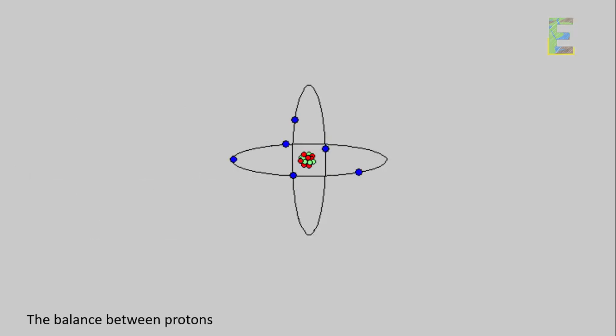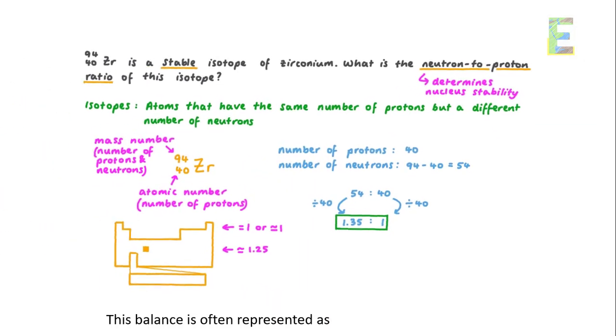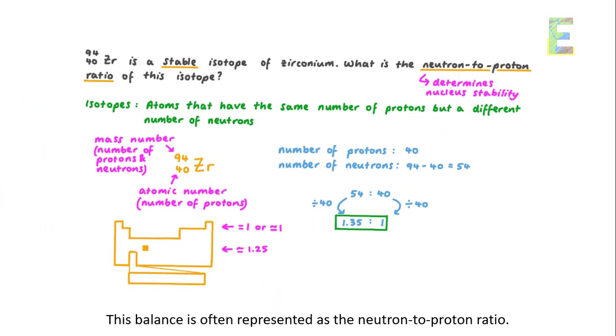Nuclear stability. The balance between protons and neutrons in the nucleus is crucial for an atom's stability. This balance is often represented as the neutron to proton ratio.